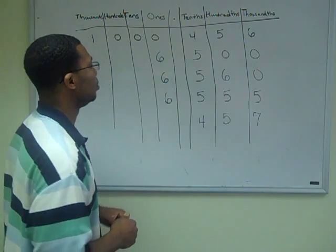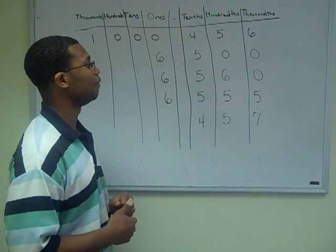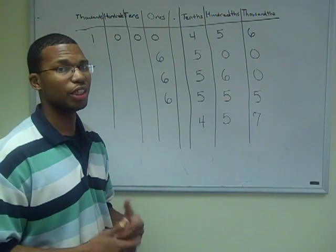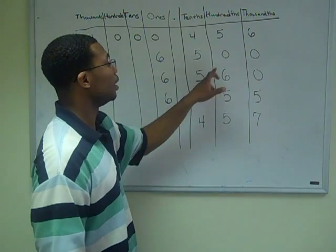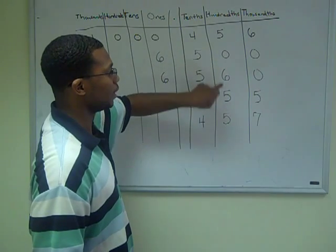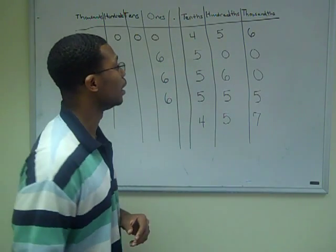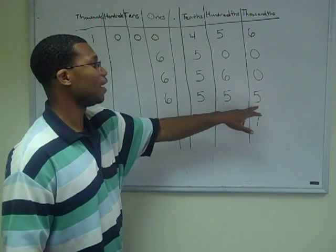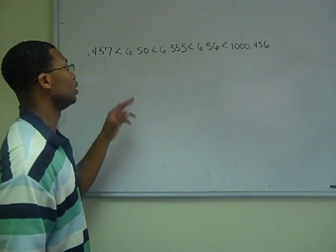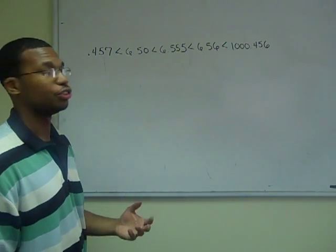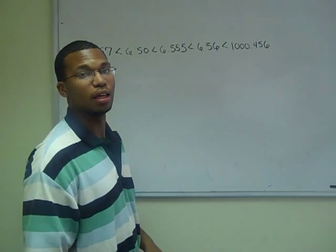Now the 3 numbers in question in the middle — we know the least amongst them would be 6 and 500 thousandths. The reason we know this is because although the numbers match in the ones and tenths column, in the hundredths column, the 0 is less than the 6 and the 5. This lets us know this number is the least, and that 6 and 555 thousandths is the second. So the correct order from least to greatest is: 457 thousandths, 6 and 50 hundredths, 6 and 555 thousandths, 6 and 56 hundredths, and 1 thousand and 456 thousandths.